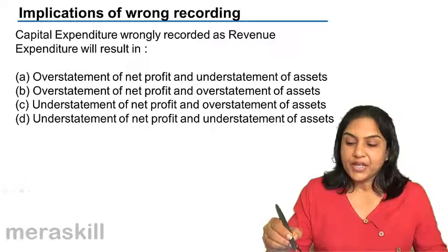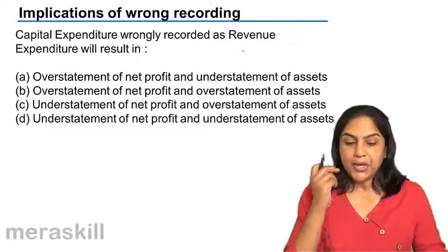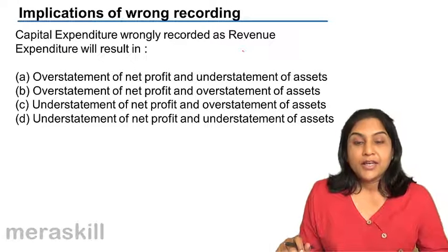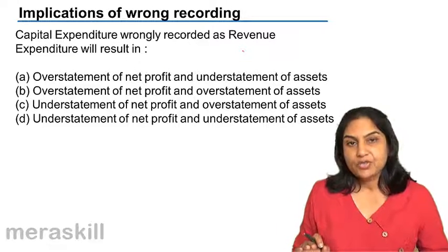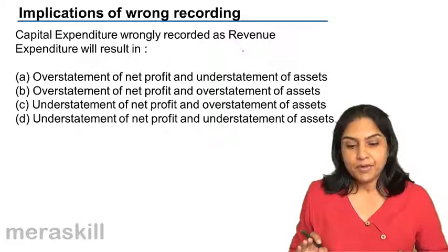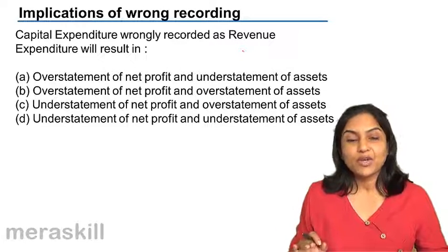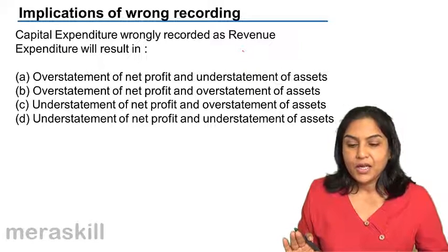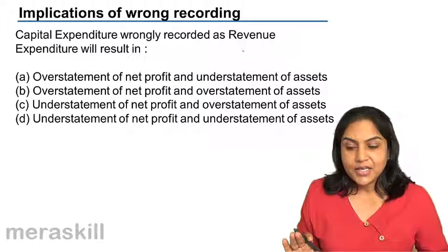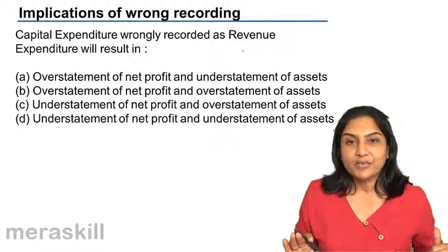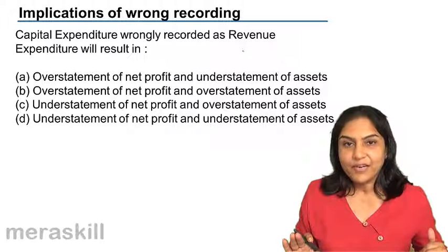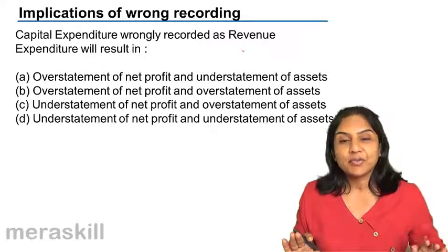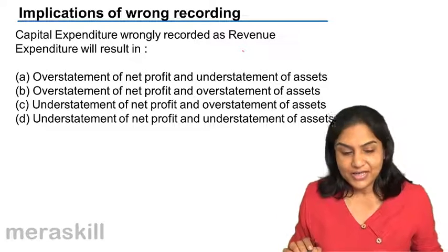Now, if capital expenditure is wrongly recorded as revenue expenditure: it is actually a capital expenditure, so the asset should have gone up. But since we have taken it as a revenue expenditure, the asset will not go up — there will be an understatement of assets. Also, since it has been taken as a revenue expenditure, your profit is going to come down, so there is an understatement of profit.